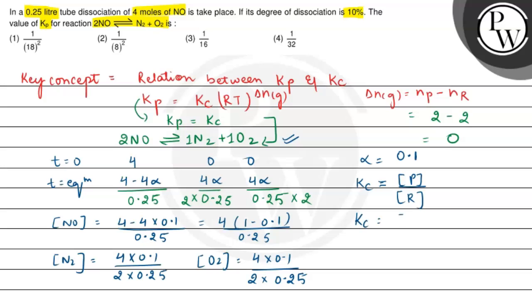Putting the values. What will it be? Concentration of N2 multiplied by concentration of O2 divided by concentration of NO raised to its stoichiometric power, that is 2. So value of Kc will come out as 1 by 18 square.